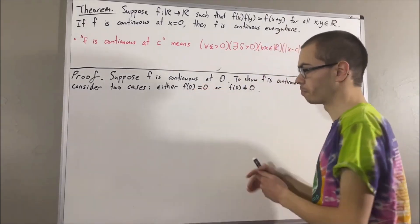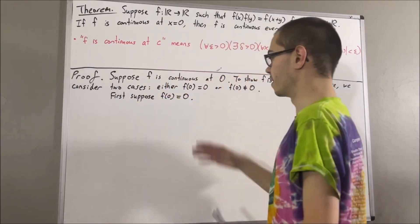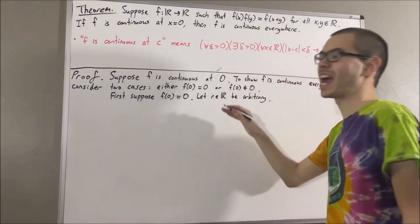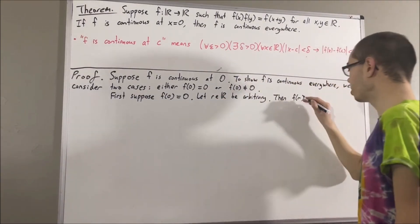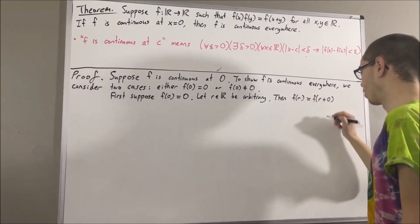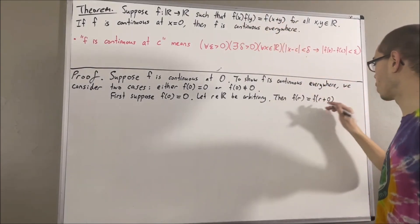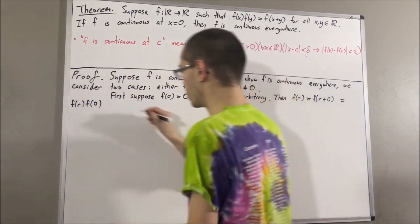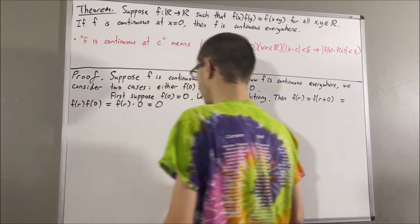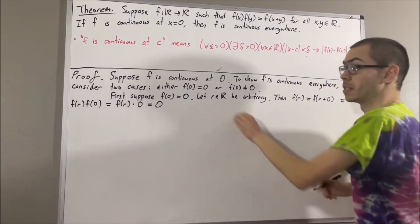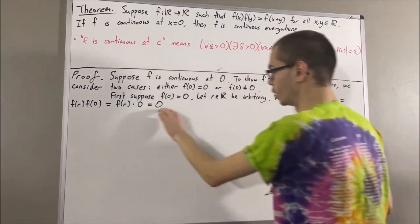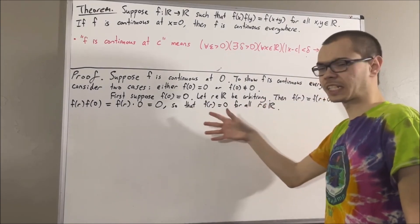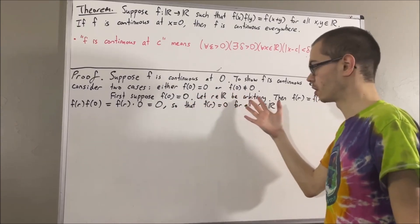Let's first consider the case f of 0 is equal to 0. The claim is that in this case, f is a constant function of 0s. Consider an arbitrary real number r. We know that f of r equals f of r plus 0, and according to the rule the function satisfies, f of r plus 0 equals f of r times f of 0. But f of 0 equals 0, so this is just f of r times 0, which equals 0. Since r was arbitrary, f of r equals 0 for all real numbers r. So f is a constant function of 0s, and any constant function is continuous, so f is continuous everywhere.